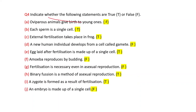Indicate whether the following statements are true or false. Oviparous animals give birth to young ones — False. The animals which give birth to young ones are known as viviparous. Each sperm is a single cell — True. External fertilization takes place in frogs — True.